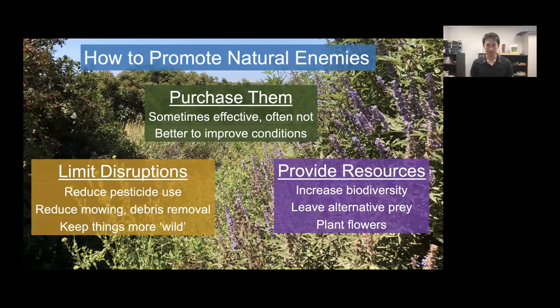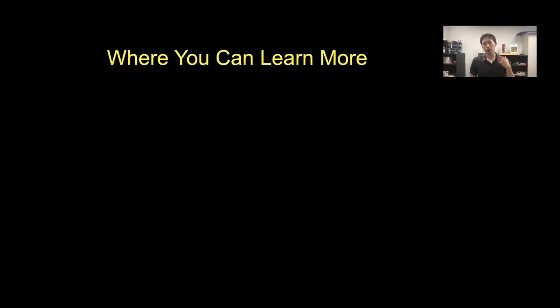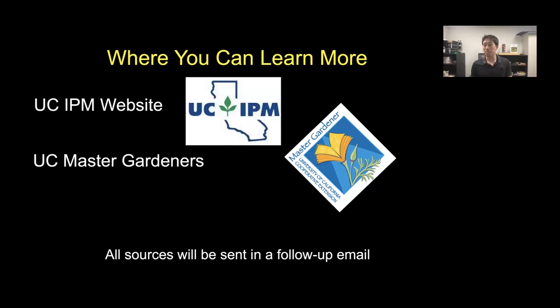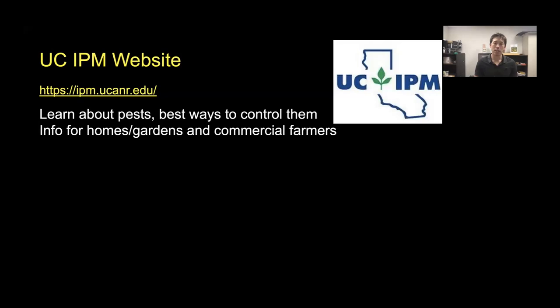We're at the end—where can you learn more? All sources will be sent in a follow-up email. Key resources include the UC IPM website, which has extensive information on pests and control methods; the UC Master Gardeners; and the Xerces Society for information on beneficial insect-supporting plants.